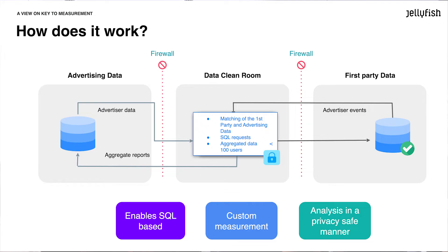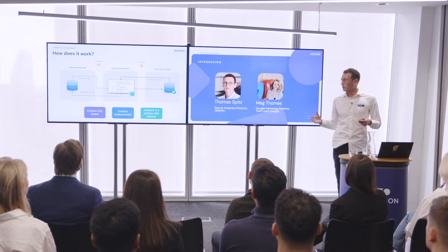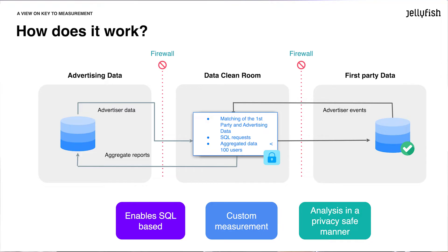So how does it work? Basically, it's a data lake — more of a technology infrastructure that operates as plug-and-play. You will have two types of data: your advertiser data — so Google, Amazon, or Facebook data — and first-party data. We will match them inside the platform at a really granular level. All that data is available with a minimum threshold of 100 users to ensure privacy. In this data lake, you are able to do SQL-based queries in order to do custom measurements and improve your analysis to understand your audience.